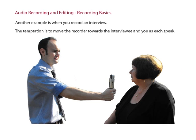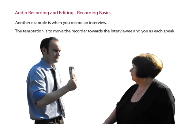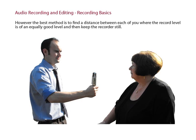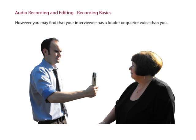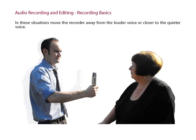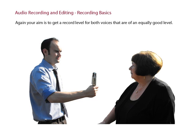Another example is when you record an interview. The temptation is to move the recorder towards the interviewee and you as each speak. However, the best method is to find a distance between each of you where the record level is of an equally good level and then keep the recorder still. If both voices are of equal volume, then this might mean the recorder is an equal distance from you and the interviewee. However, you may find that your interviewee has a louder or quieter voice than you. In these situations, move the recorder away from the louder voice or closer to the quieter voice. Your aim is to get a record level for both voices that are of an equally good level.